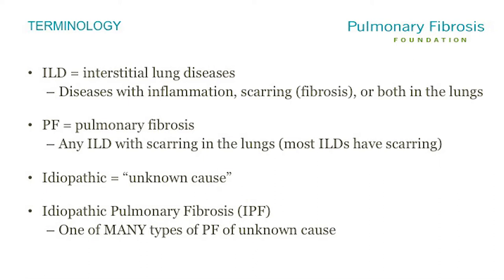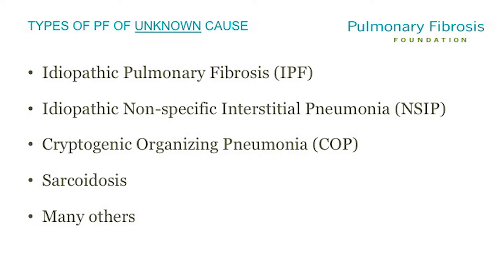You'll also hear the word idiopathic, which means of unknown cause. You'll also hear the term idiopathic pulmonary fibrosis, or IPF. IPF is just one of many types of pulmonary fibrosis of unknown cause. Other diseases of unknown cause include idiopathic nonspecific interstitial pneumonia, cryptogenic organizing pneumonia, sarcoidosis, and many others.